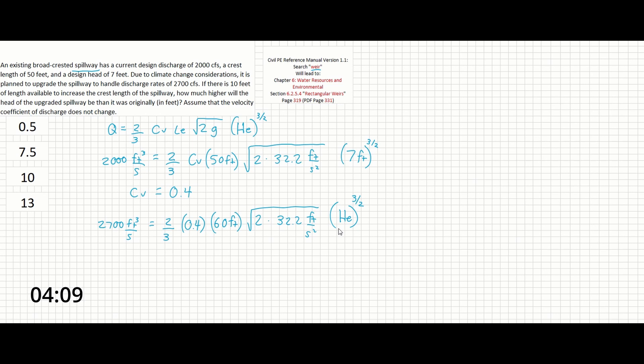So same thing here. If we were to multiply by 3, then divide by 2, 0.4, 60, and this quantity, we could get HE raised to the 3 over 2, which is sometimes just where I stop if I don't trust myself to get it all in the calculator at once, equals about 21 feet. And then therefore, the new head equals about 7.61 feet.